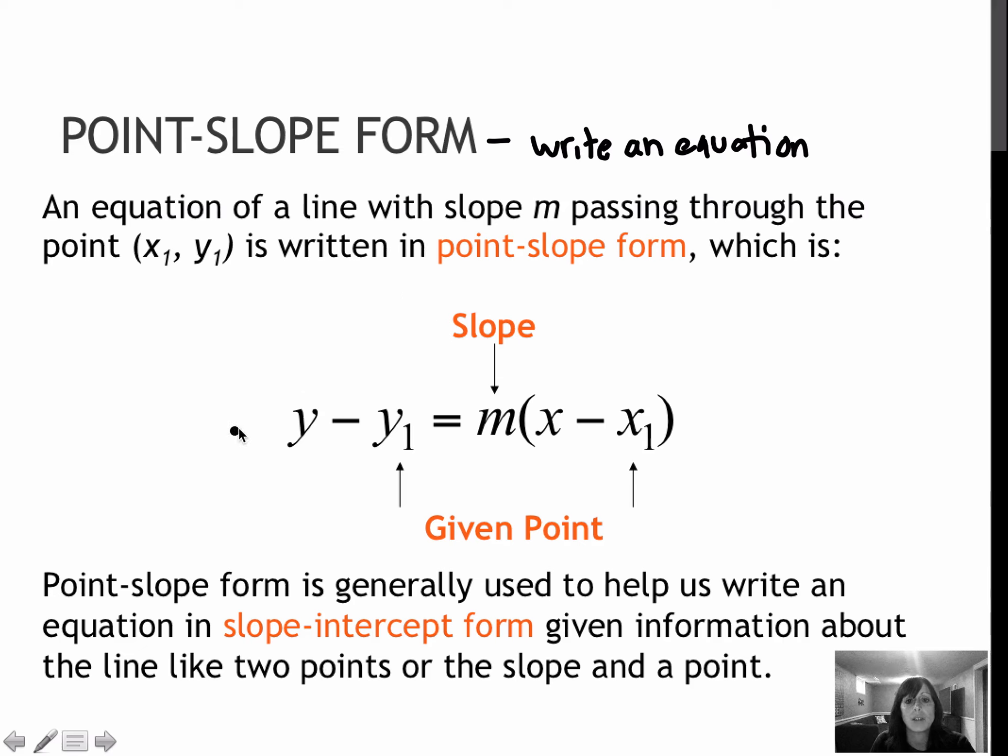Here's the point-slope form, and I want to point out that this y will always be y. It will never be replaced with a number. This m, obviously, is a slope. This x is always x and never replaced with a number. So the ones that will be replaced with a number are the slope, the y₁, which is the y-value of our given point, and the x₁, which is the x-value of our given point. So you'll be replacing those three values, and then we're going to do some work to turn this into slope-intercept form, which is very friendly if we have to graph the equation.